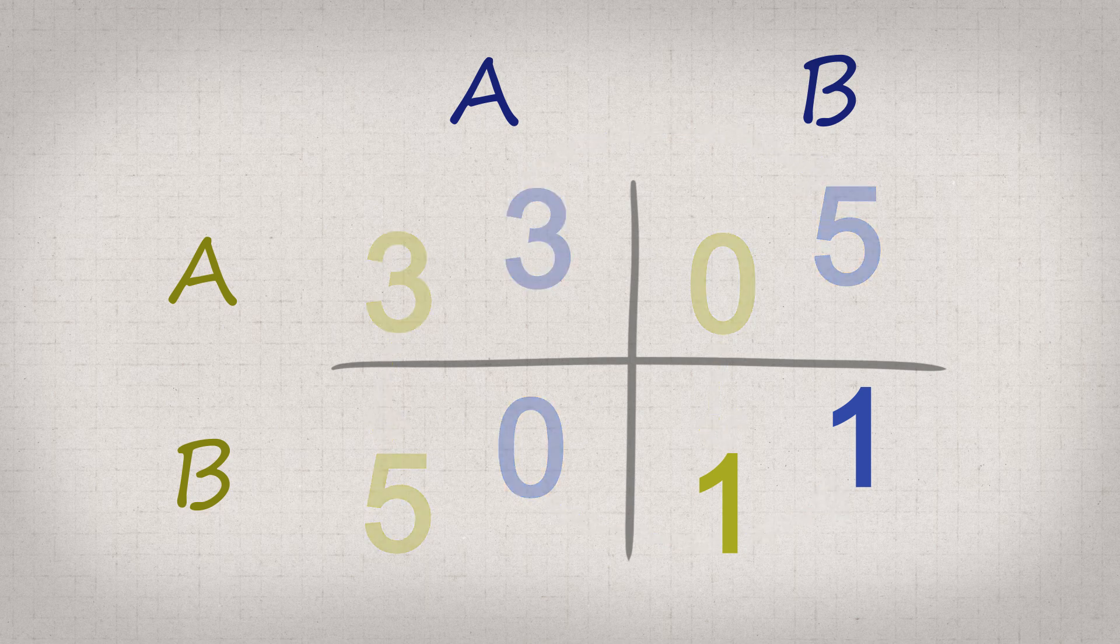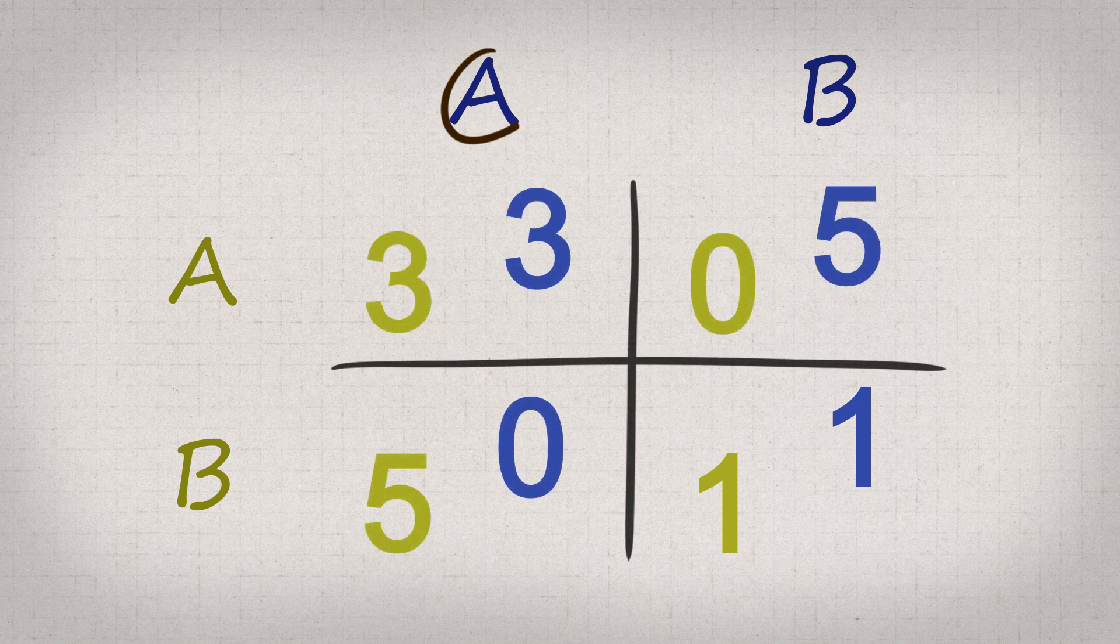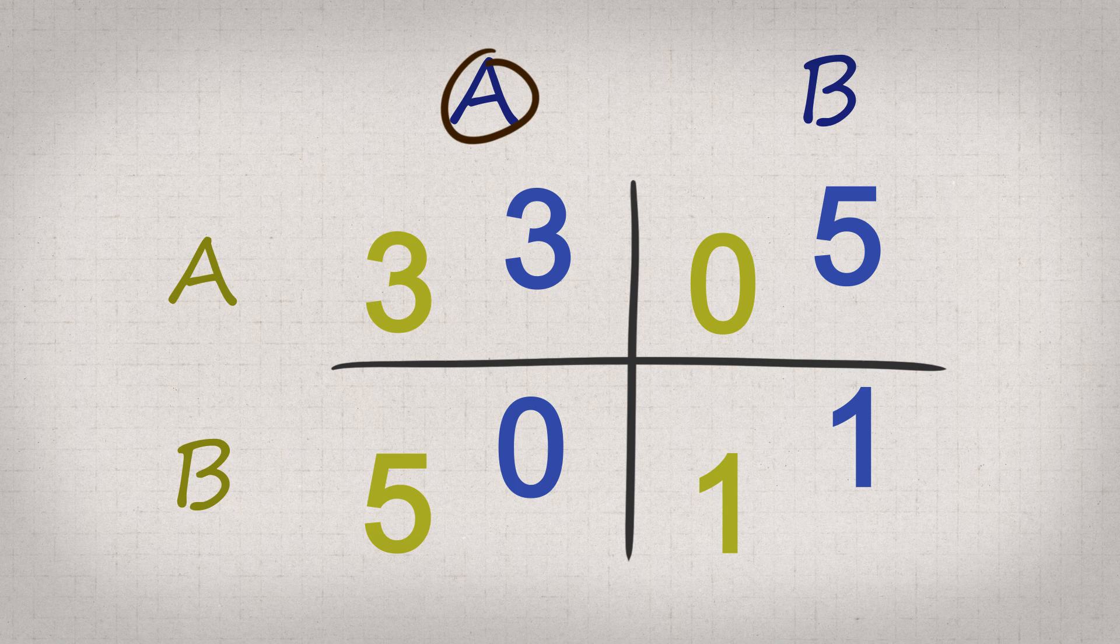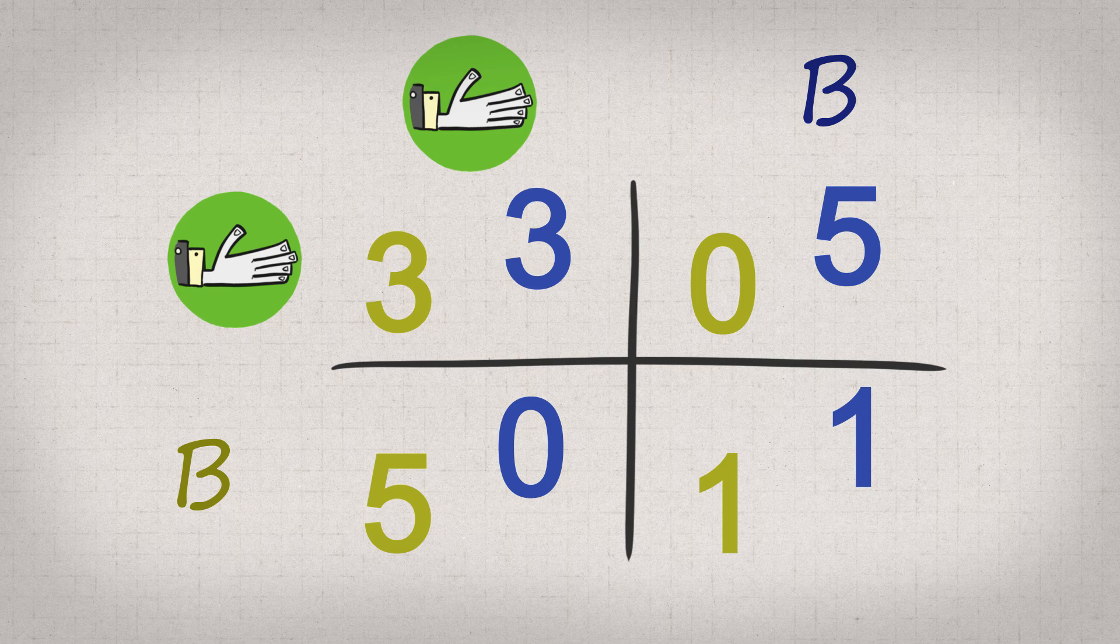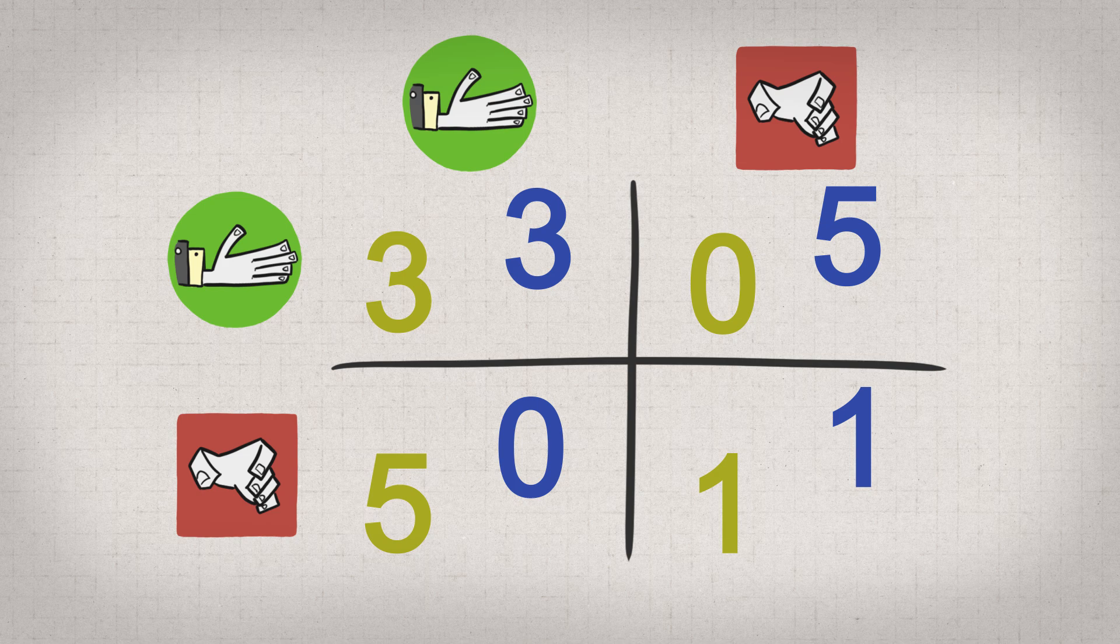Because going option A is worse for the individual, but better for the other person, and best for the group, we might call it sharing, or cooperating, or whatever depending on the situation. It looks like working together to get more together. Going option B is always better for the individual, but worse for the other person, so it looks like defecting, cheating, or betraying depending on the situation. They're aiming for personal gain.